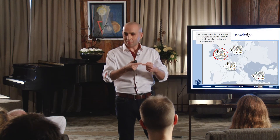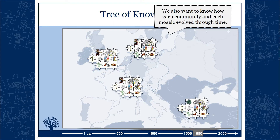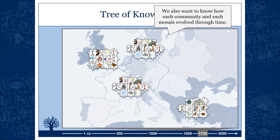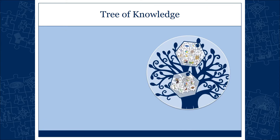Wouldn't it be great to have this? And then, obviously, it would also let us trace the evolution of every community and every mosaic. So at 1720, you'd see the transition: in England, they're already Newtonian; in France, Catholic Cartesian; in Northern Europe, Protestant Cartesian; and in the Ottoman Empire, still Islamic Aristotelian. This is the tree of knowledge.